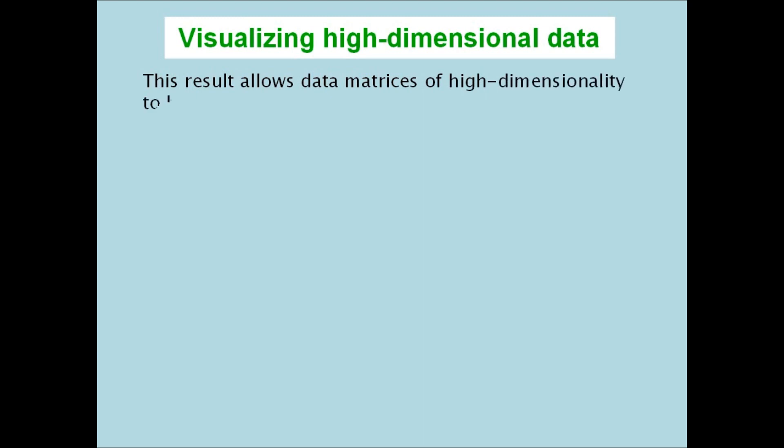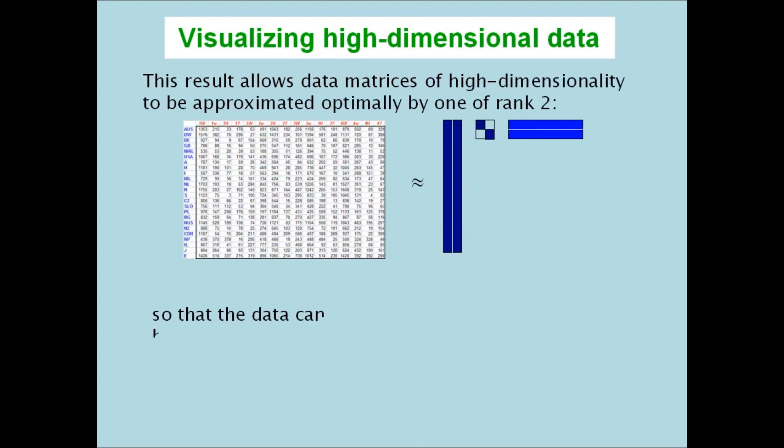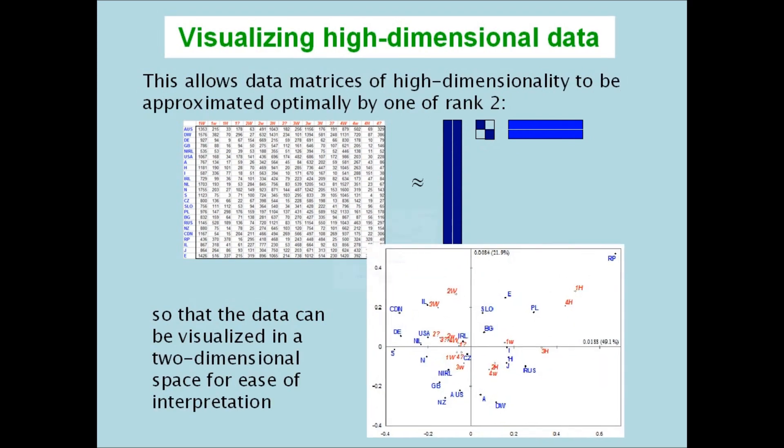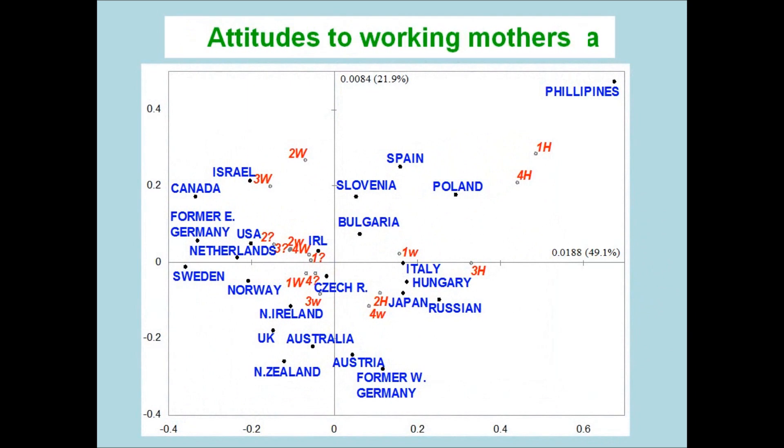This result allows data matrices of high dimensionality to be approximated optimally by one of rank 2, so that the data can be visualized in a two dimensional space for ease of interpretation, as shown by this map of countries in terms of their attitudes about whether mothers should work outside the home or not.